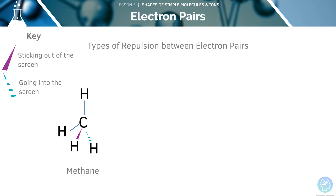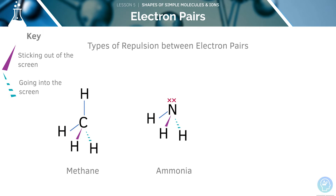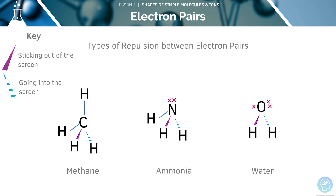Here, we can see that methane has no lone pairs. The bond angle here is going to be 109.5 degrees. Now, we'll see ammonia, which has one lone pair. This means that the bond angle will be 107 degrees. Finally, we'll look at water, which has two lone pairs. Its bond angle is going to be 104.5 degrees.